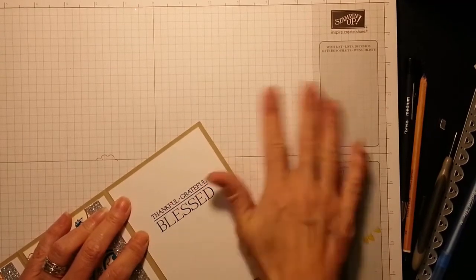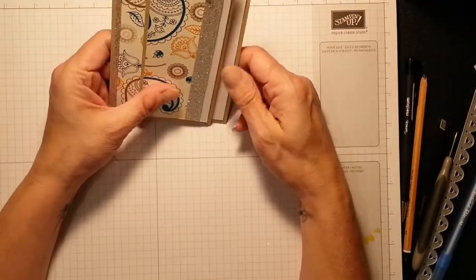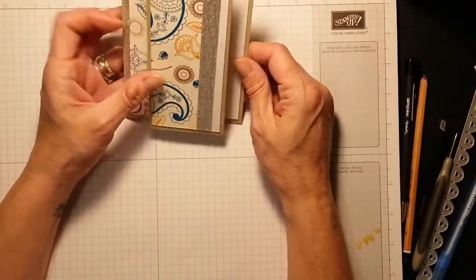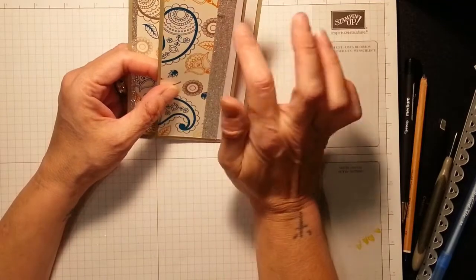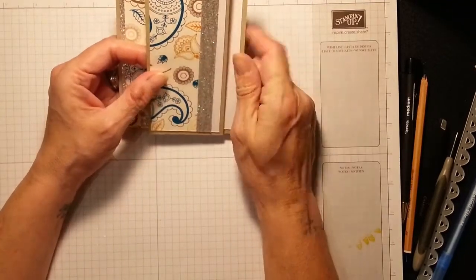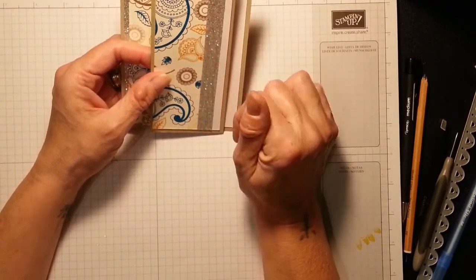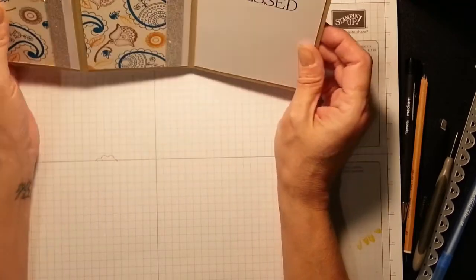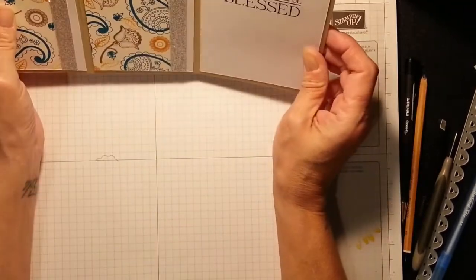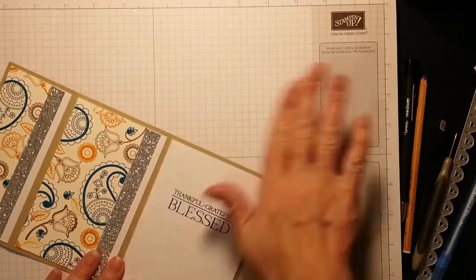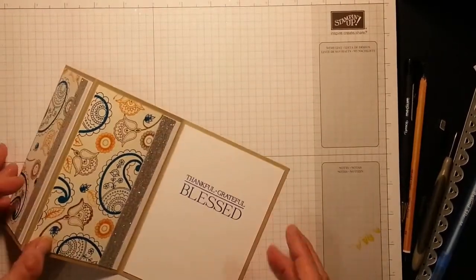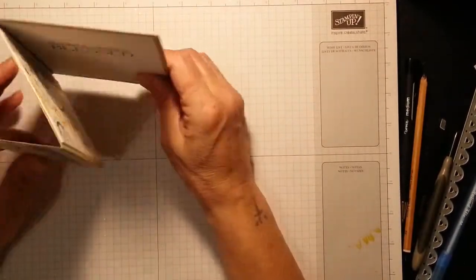I love it. How cute is that. You can always add some dazzling diamonds, some Wink of Stella, some rhinestones, but I think it's just kind of a little blend. So thanks again for watching. Until next time.